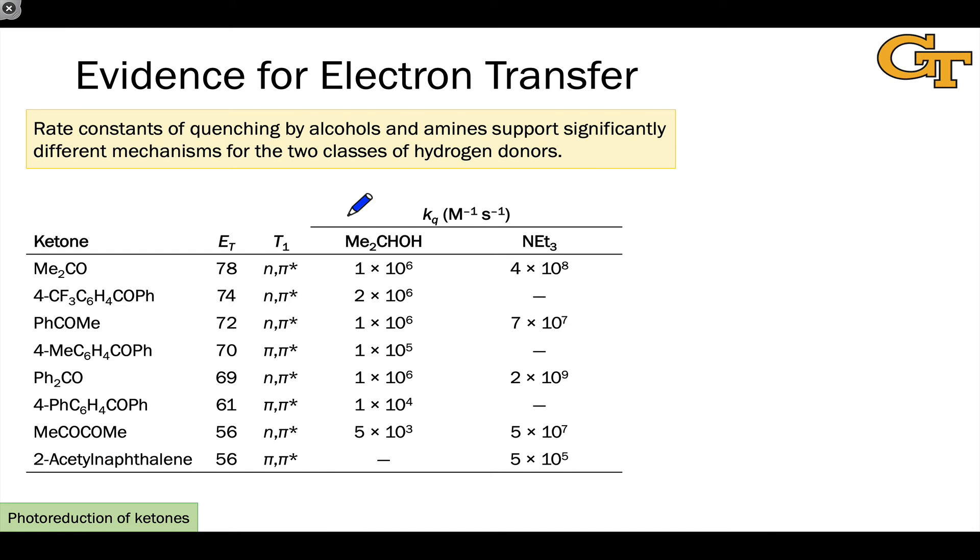Let's look now at some evidence of electron transfer. The data you see here are the rate constants of quenching for a variety of different ketones with isopropyl alcohol as hydrogen donor and triethylamine as hydrogen donor. We've also tabulated the triplet energies and the configurations of the lowest excited triplet states for each of these ketones. I want to point out some differences between the alcohol and amine rate constants of quenching to indicate that this data supports significantly different mechanisms for the alcohol and amine as hydrogen donors. We've already stipulated that as a hypothesis, but this provides evidence that the amines in particular are engaging in electron transfer.